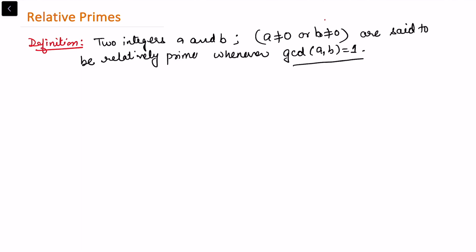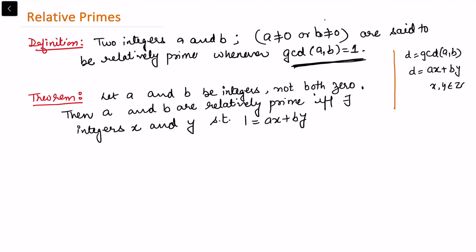Whenever their gcd is one, we say a and b are relatively prime integers. As proved in the last video, whenever d is the gcd of two integers a and b, we can always write d as a linear combination ax plus by for some integers x and y. So whenever gcd(a,b) equals one, we get our first result: a and b are relatively prime if and only if there exist integers x and y such that 1 = ax + by.